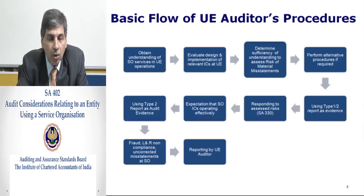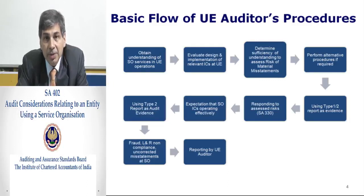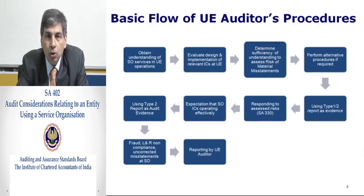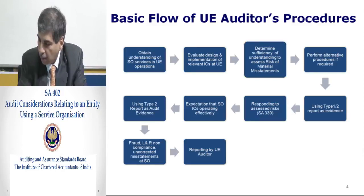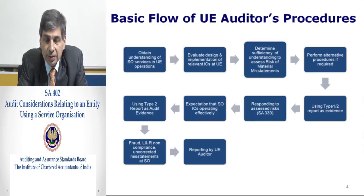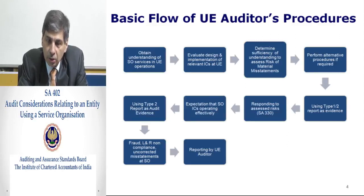The user entity auditor needs to determine whether he has sufficient understanding of the entity to assess the risk of material misstatements that may impact the user entity. In the event he is unable to determine the sufficiency of understanding or assess the risk of material misstatement, he would need to perform alternative procedures. He may use a Type 1 or a Type 2 report as evidence to understand the classes of transactions processed at the service entity. We will deal with the difference between a Type 1 and a Type 2 report during this presentation.